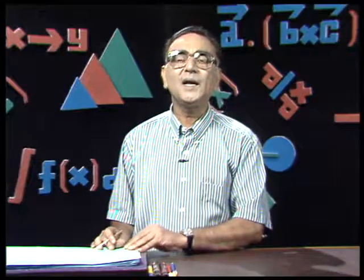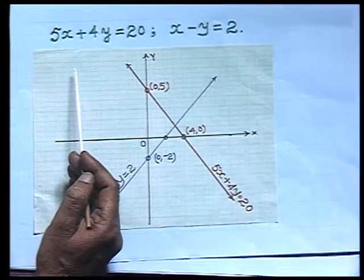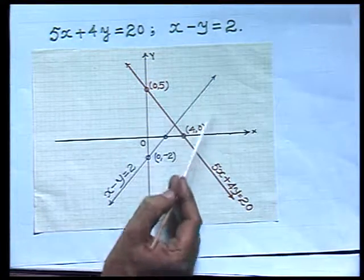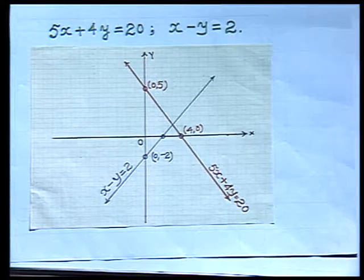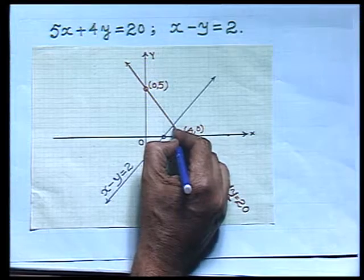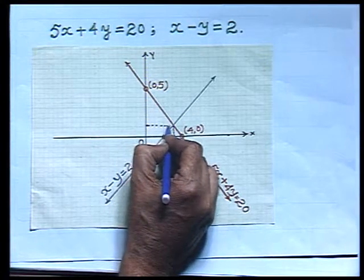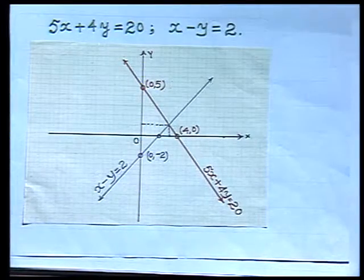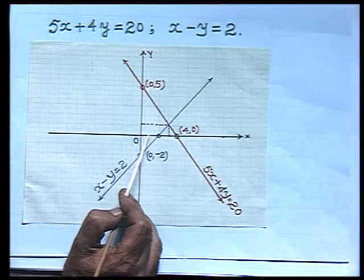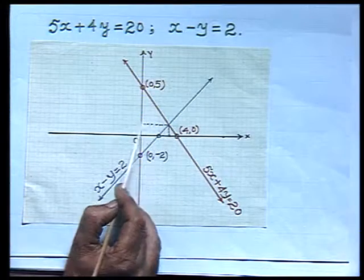Let us look at another problem we face in plotting the system. Here the system has been plotted: 5x plus 4y equals 20 and x minus y equals 2. From the point of intersection, we drop perpendiculars onto the x-axis and y-axis. I have already calculated the values as x equals 28/9 and y equals 10/9, which of course becomes very difficult to locate accurately from the graph.